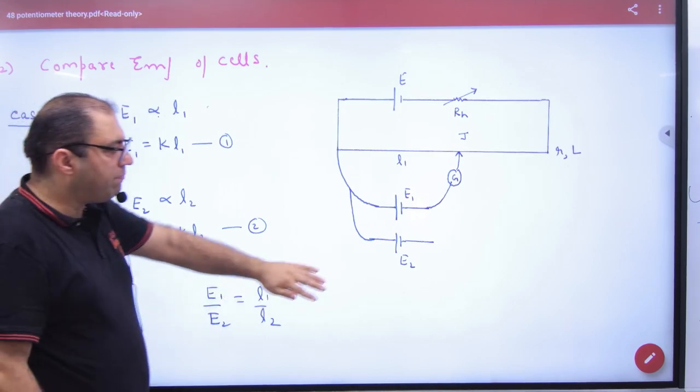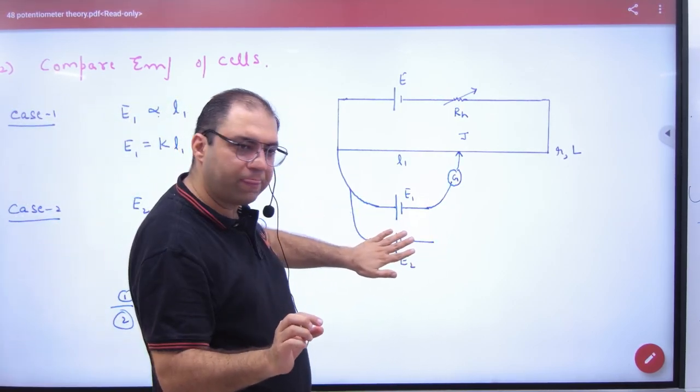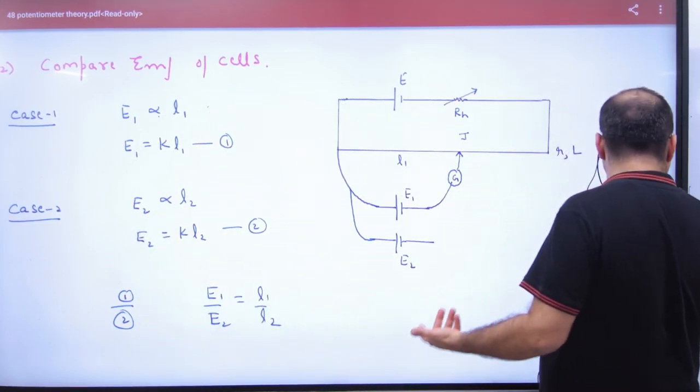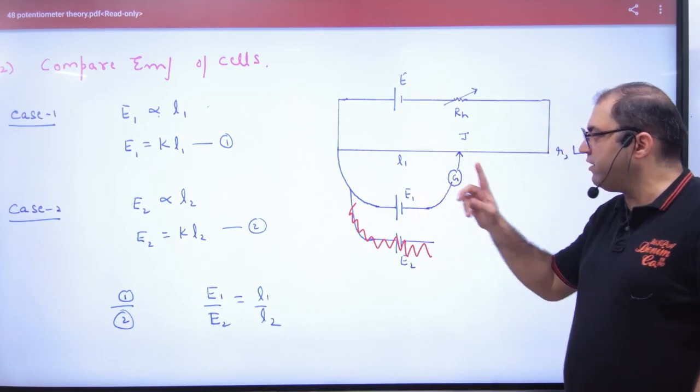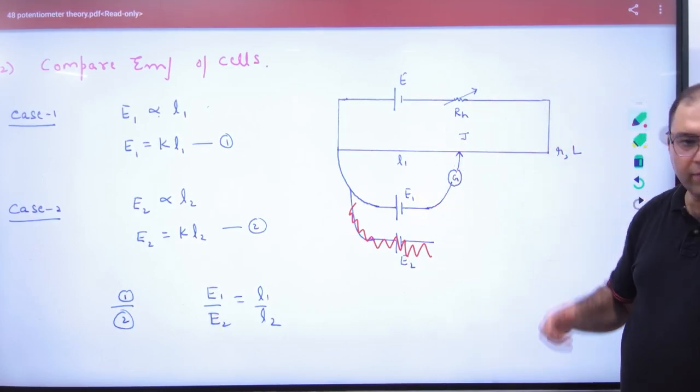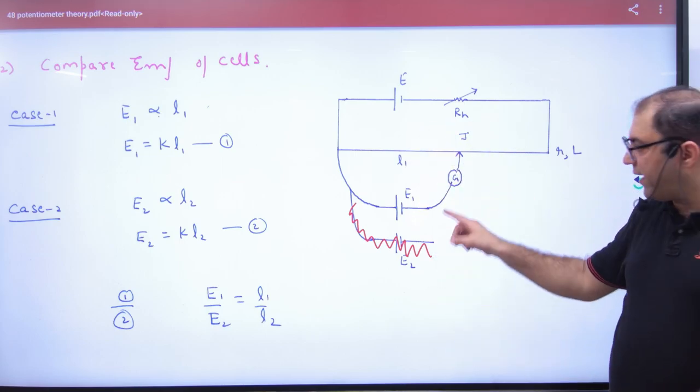How do you do it? First, you just take one EMF, just take one cell, leave it. So this is the two must show, but at a time it connects one. So imagine that it is E1 you have connected, balanced, balancing length L1, because it is balanced.